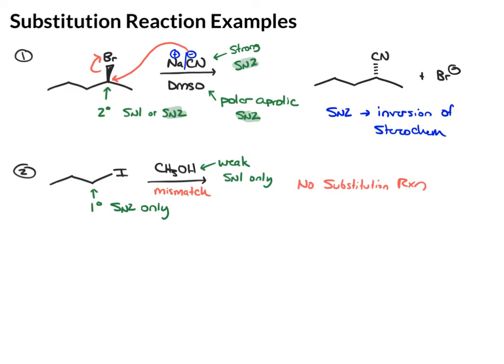In our third example, we'll use the same organoiodide, but I'm going to switch the methanol to a strong nucleophile. So here is the primary iodide, which is SN2. Now we have a strong nucleophile that's going to favor SN2. And we have a polar aprotic solvent that favors SN2. So now we have a match between our mechanisms. So this will undergo the SN2 reaction.